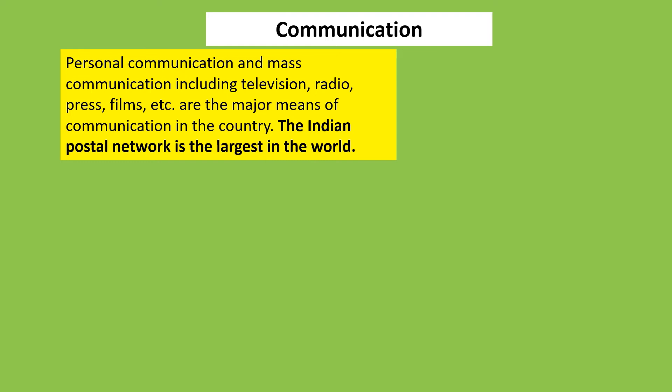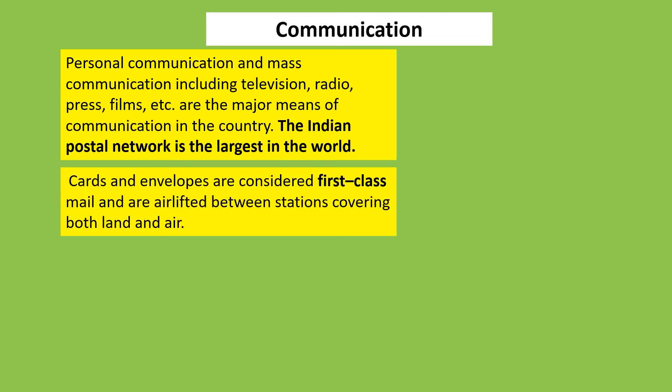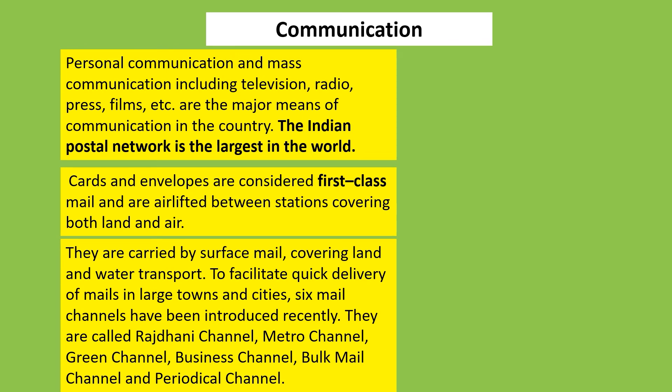Cards and envelopes are considered first-class mail and are airlifted between stations covering land and air. Surface mail covers land and water and delivers quickly. The Indian Postal Service introduced six channels: Rajdhani Channel (faster), Metro Channel (more personalized, delivering mail across towns and cities), Green Channel (within the town — the fastest), Business Channel, Bulk Channel, and Periodical Channel.